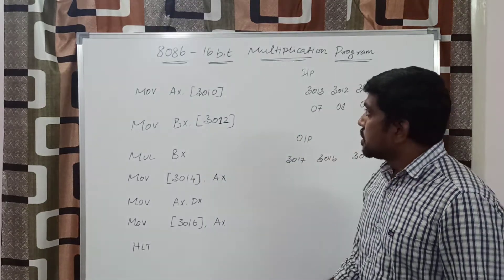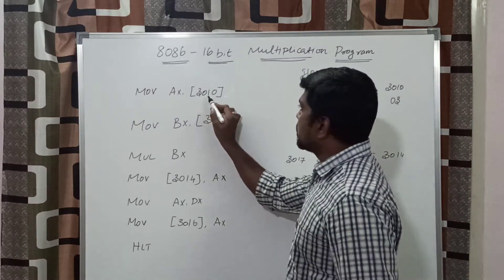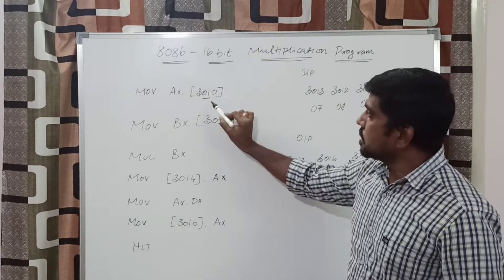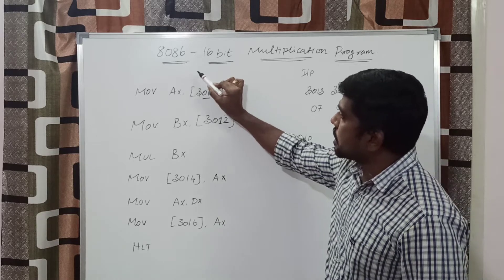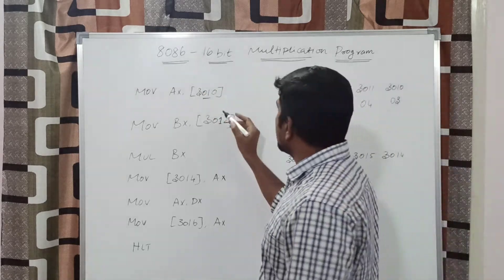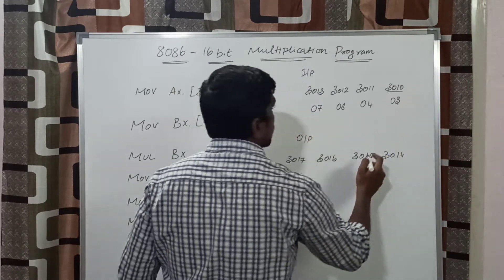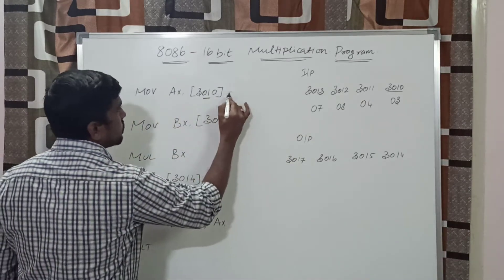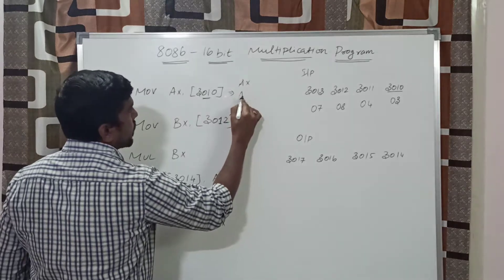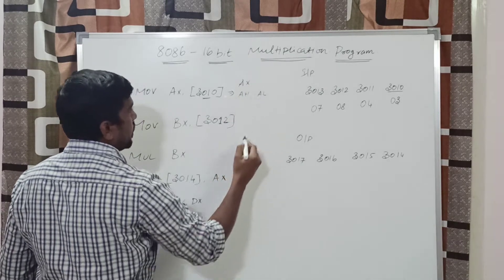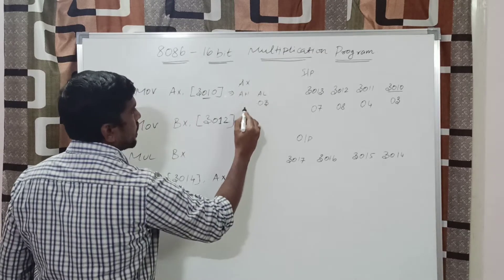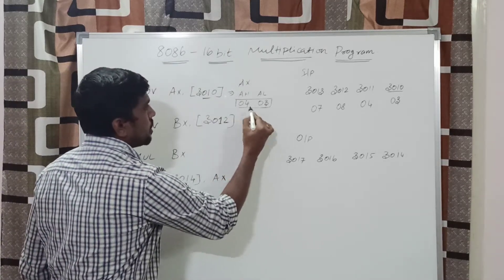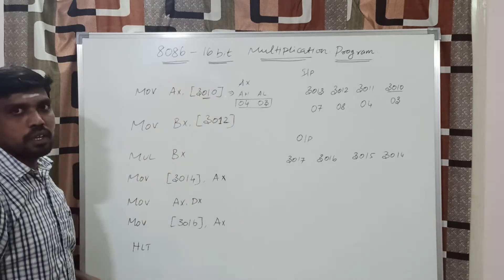Let us go to the program. The first instruction is MOV AX, 3010. In this instruction, you represent the address location 3010. Whatever content is present in this memory location, the content is transferred to the AX register. In this program, the content of 3010 is 03 and 3011 is 04. After execution of this instruction, the AX register — which is a 16-bit register — can be split into AH and AL. The AL register contains 03 and AH register contains 04. This gives you the first 16-bit value transferred into the AX register.